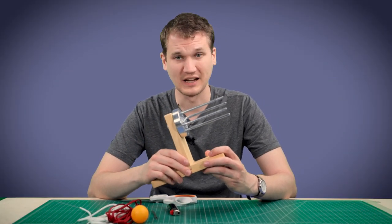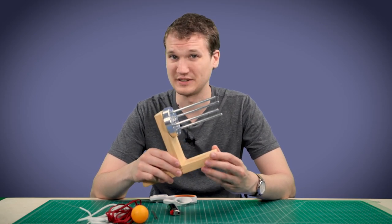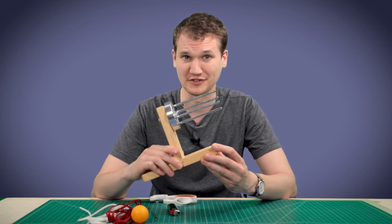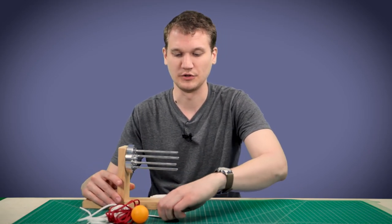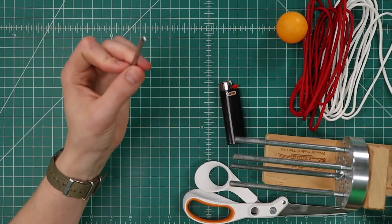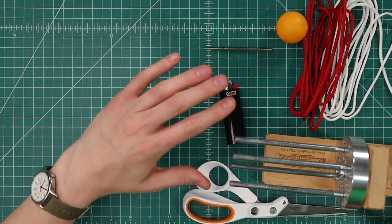For tools, you're going to need a monkey fist jig. Because this is a larger monkey fist, it really helps to have a jig instead of trying to tie this on your fingers or doing it freehand. You also need a fid to get the cord through some tight places, and then of course scissors and a lighter.